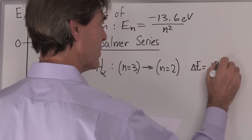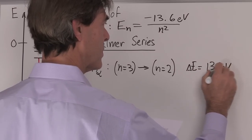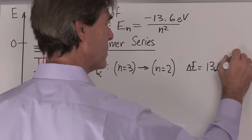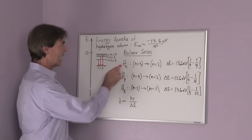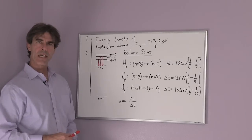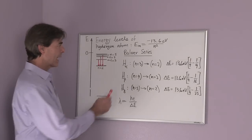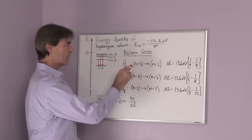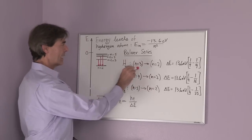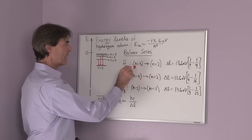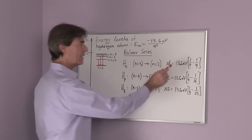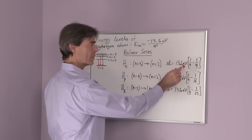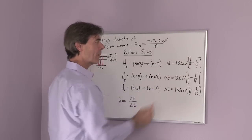For the case of the transition from n equals 3 to n equals 2, we call this transition H alpha. That's the first line in the Boehmer series, and we can calculate the energy difference by subtracting the n equals 2 state from the n equals 3 state, and this is 13.6 electron volts times 1 fourth minus 1 ninth.